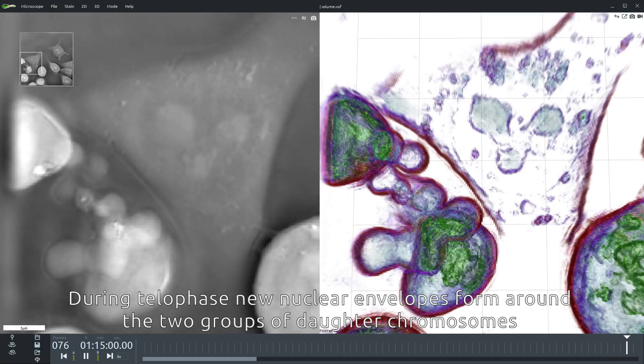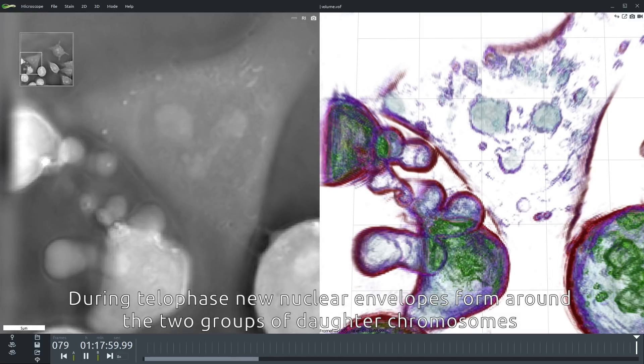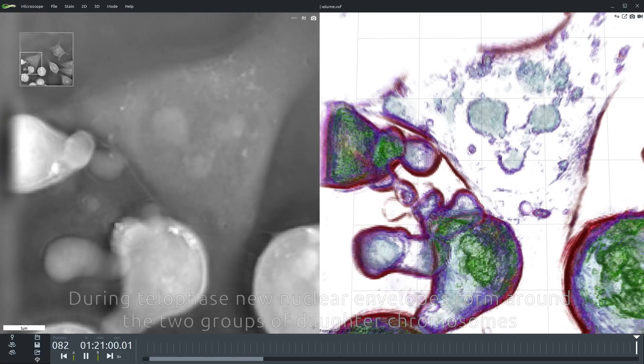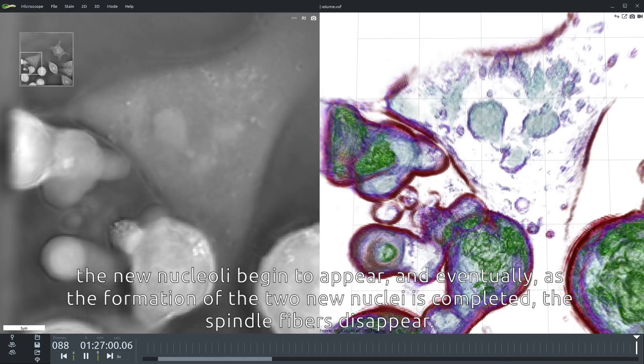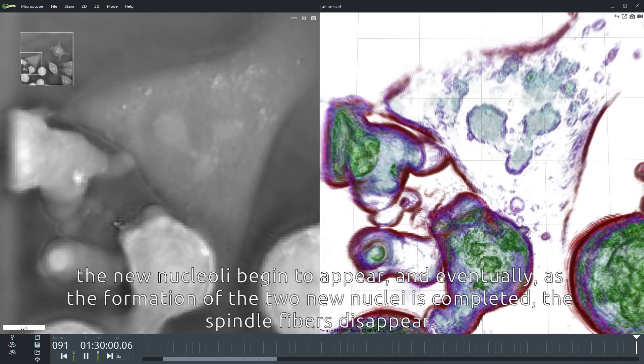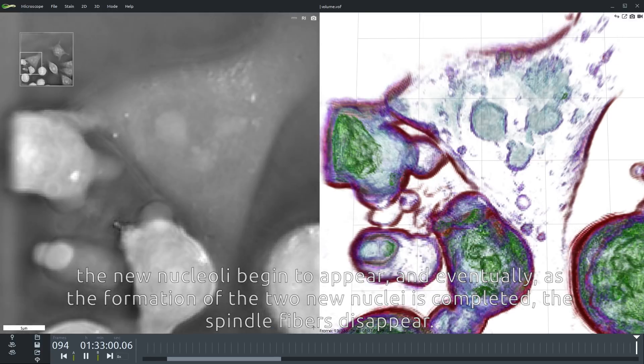During telophase the new nuclear envelopes form around the two groups of daughter chromosomes. The new nucleoli begin to appear and eventually as the formation of the new nuclei is completed, the spindle fibers disappear.